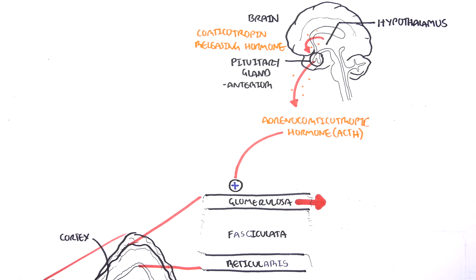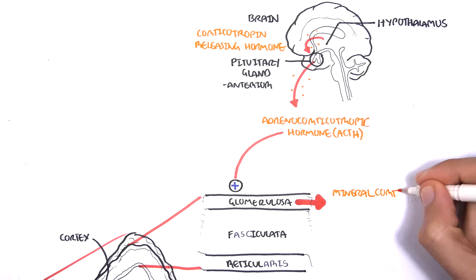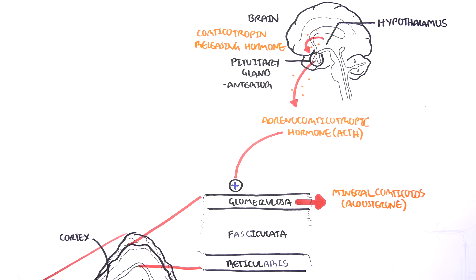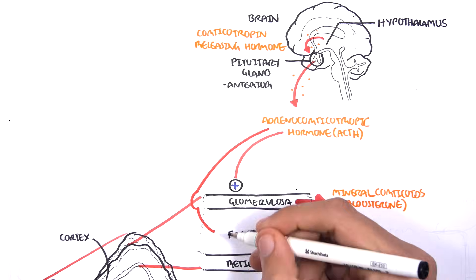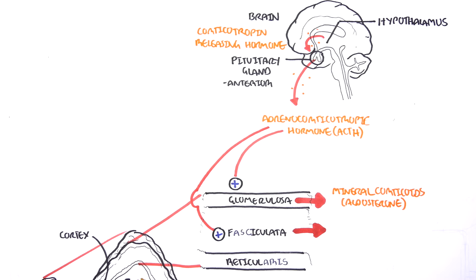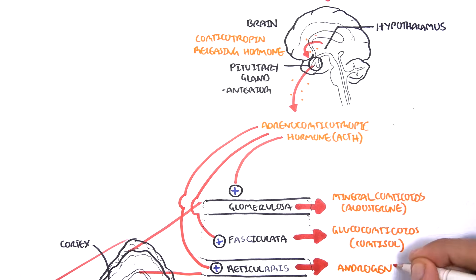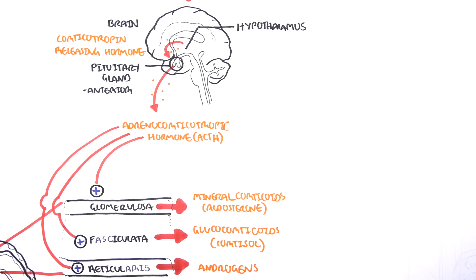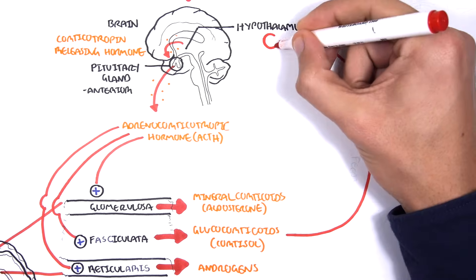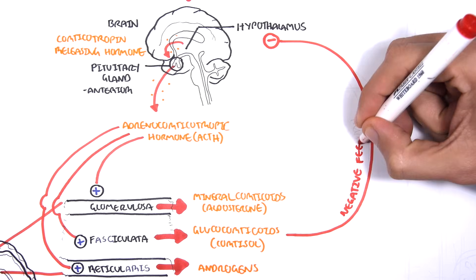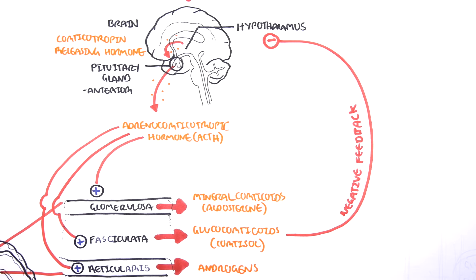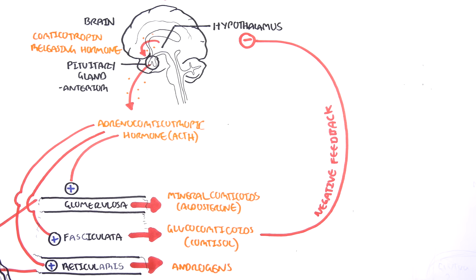ACTH stimulates cells within the zona glomerulosa to release mineralocorticoids, mainly aldosterone, and stimulates cells in the zona reticularis to release androgens. Of these three hormones, glucocorticoids play the important role of providing negative feedback to the brain — signaling the hypothalamus to reduce corticotropin-releasing hormone production, and thus reducing the whole cascade.